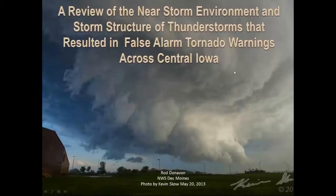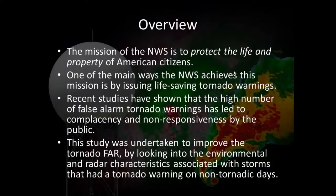What I did is I went back and looked at a lot of our false alarm tornado cases from basically since we started polygon warnings back in 2007, to see what actually stood out and why these storms didn't verify. SPC has a paper out where they looked at storms that produced two-inch hail and also 65-knot winds or greater to help define supercells that were false alarms as well. Our mission is to protect life and property, and certainly one of the big ways to do that is by issuing life-saving tornado warnings. As recent studies show, the higher the false alarm rate, the more complacent the public may become with our other warnings.